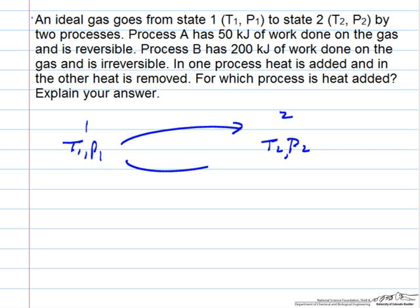Two processes. Process A, work is 50 kilojoules, and it says work is done on the gas, so that's positive. It says this is reversible.